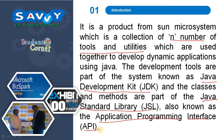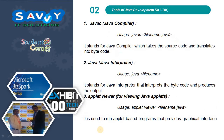Now we are learning about what the Java Development Kit contains and what the Application Programming Interface contains. The first tool of the Java Development Kit is javac — it is a compiler. The Java compiler converts source code into bytecode. The command is: javac filename.java.